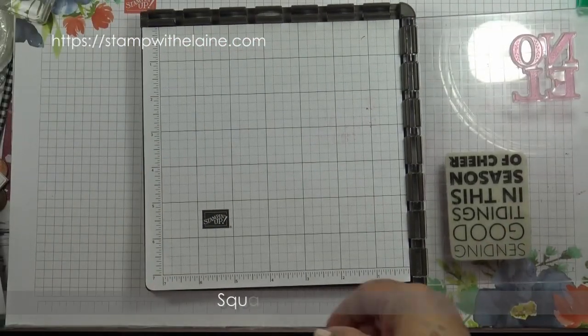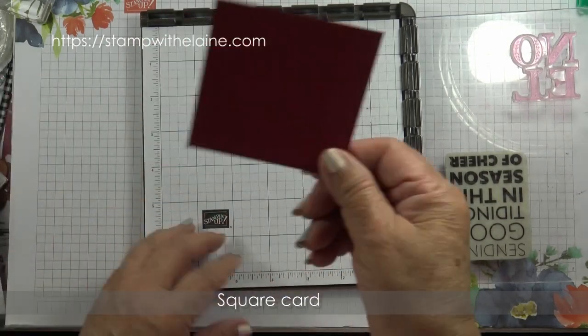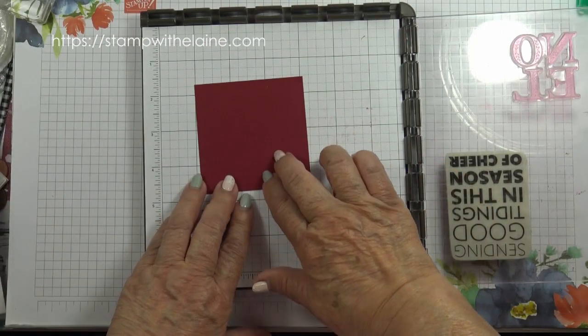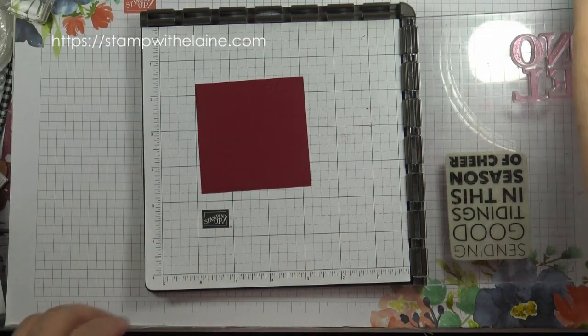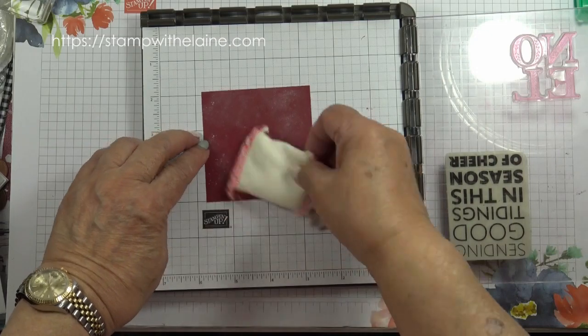Now we're going to tackle doing the square card. So first thing to do is use the cherry cobbler mat layer and the dust buddy, so tap that onto your cardstock.